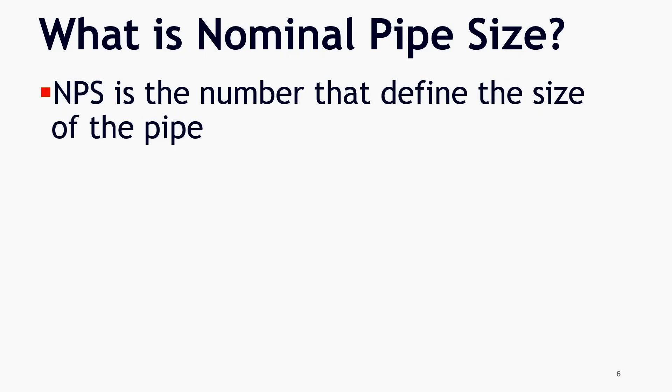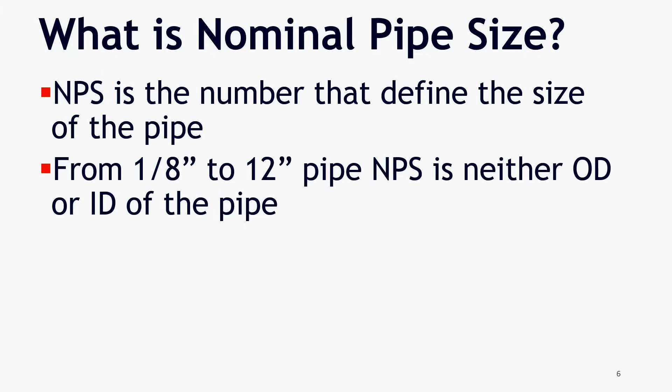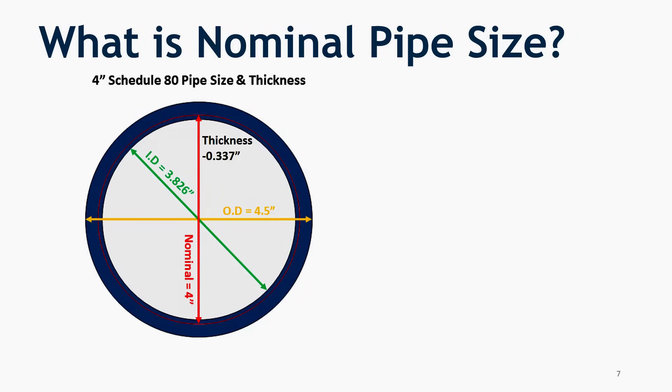For example, when you say 6 inch pipe, the 6 inch is the nominal size of pipe. But there is some catch here. For 1/8 inch to 12 inch pipe, NPS is neither OD or ID of the pipe. Check this example of 4 inch schedule 80 pipe. For 4 inch schedule 80 pipe, OD is 4.5 inch, thickness is 0.337 inch. So the nominal 4 inch is somewhere in between.